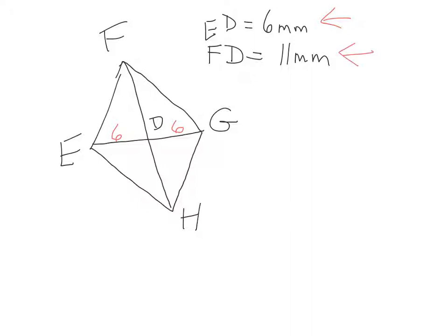FD is 11 millimeters. So this guy here is 11, and that also means that this here is 11. So if we go back to our area formula, we're going to have to figure out what our diagonals measure.